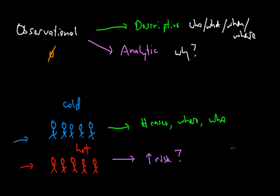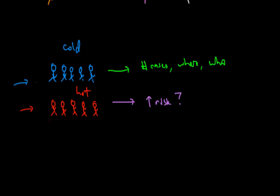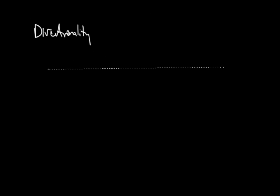The British Doctors Study looked at who developed lung cancer — those who smoked or those who didn't — and because of that it falls under the category of descriptive observational studies. The next parameter by which we can separate different types of epidemiological studies is directionality, which refers to which is observed first in a particular study: the exposure or the outcome.